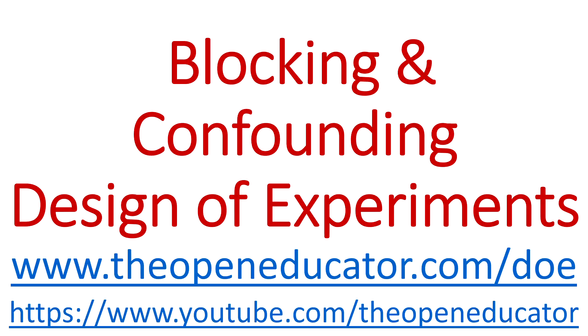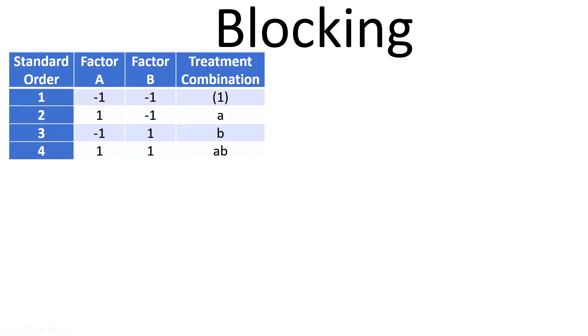Blocking and confounding in design of experiments. Think about this simple design situation: we have two factors A and B, and for each of these factors we have two levels. To complete one full replication, we need four different experiments with four homogeneous experimental units.